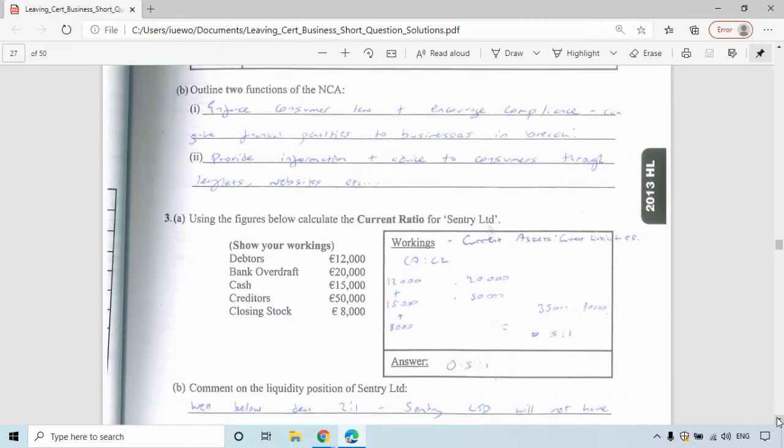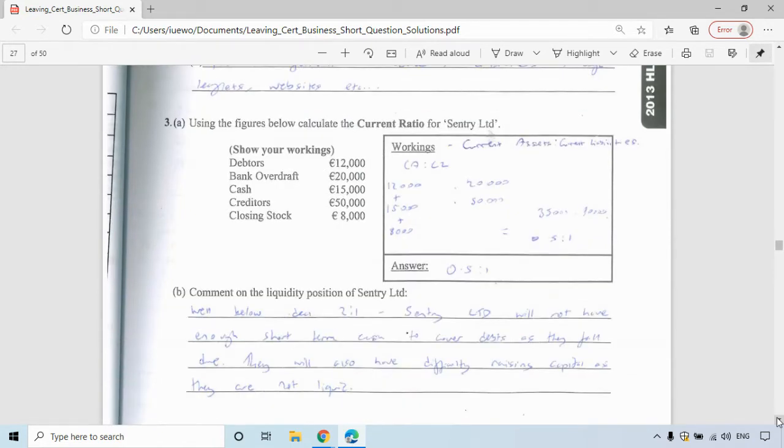Question three, you're asked to calculate the current ratio for Sentry LTD. Current ratio is current assets to current liabilities. An asset is something that you own or is owed to you, and a liability is something that you owe. You always want to have more assets than you do liabilities. Debtors owe us money, so that's a current asset. A bank overdraft is owing money to the bank, so that's a current liability.